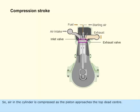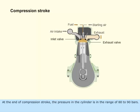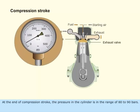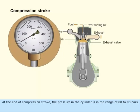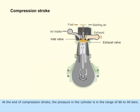Air in the cylinder is compressed as the piston approaches the top dead center. At the end of the compression stroke, the pressure in the cylinder is in the range of 80 to 90 bars.